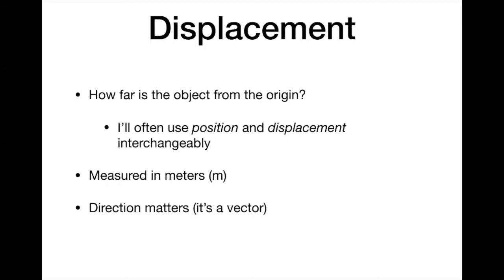So it matters if you're moving to the left or to the right; it matters if you're above or below the zero point. The symbol we use for displacement is generally X, especially in one dimension. When we have motion in two dimensions — side to side and up and down — then we can use the familiar X and Y for those.